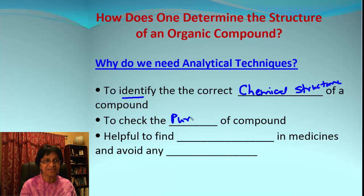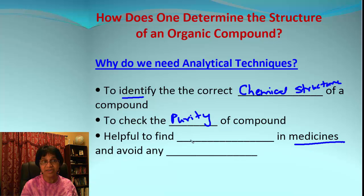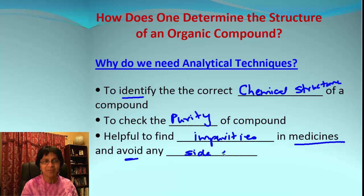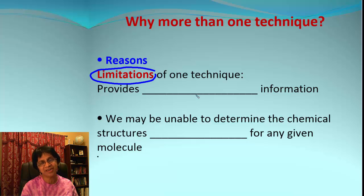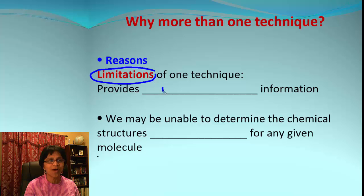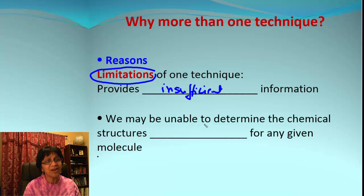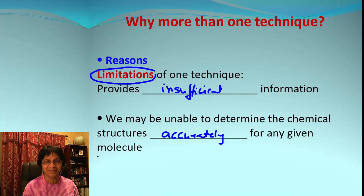We can also check the purity of a compound, which is especially essential when considering medicines. We need to know which impurities are present, and if we know the impurities, we can probably guess what side effects they could cause and avoid those side effects by removing them. The reason we need more than one technique is simple: every technique has some limitations, so it will provide insufficient information, and as a result we may not be able to accurately determine the chemical structure of a given organic compound.